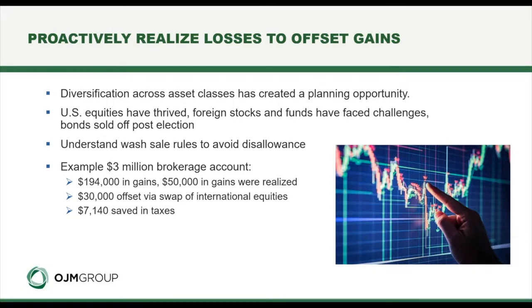Proactively realize losses to offset gains. By diversifying your investment strategy across multiple asset classes, it creates a planning opportunity. U.S. equities have thrived since the financial crisis, but foreign stocks, commodities, and bonds have all had periods of underperformance. You need to understand the wash sale rules to avoid a disallowance — if you liquidate a security to claim a loss and buy the same security within 30 days, your loss could be disallowed. Speak to your financial advisor or tax advisor before taking action on this strategy.